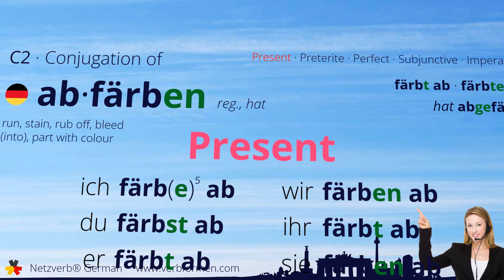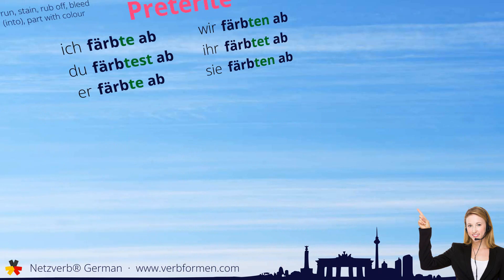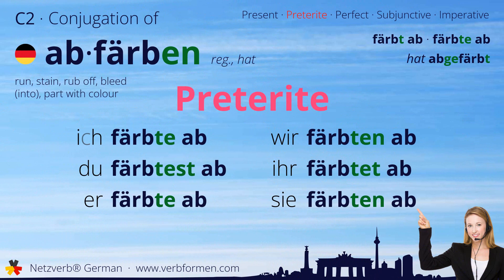Next up is the preterite. Ich färbte ab. Du färbtest ab. Er färbte ab. Wir färbten ab. Ihr färbtet ab. Sie färbten ab.